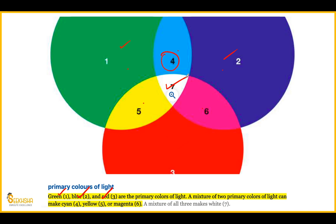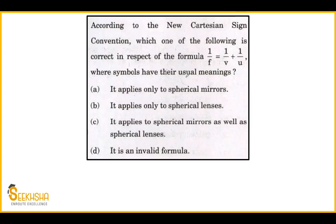This is a very important concept to remember. In the prism, we also see that white light, when it passes through a prism, forms seven colors of light. That's the concept that comes from here. Let's see the next question.